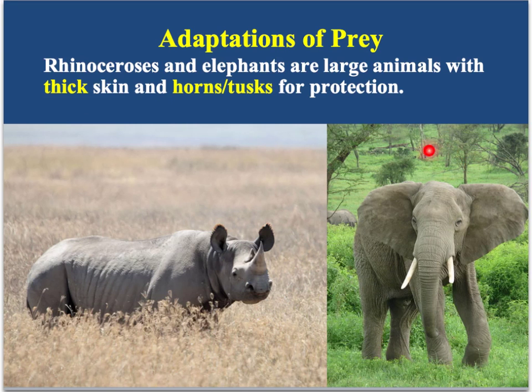Here we have a rhinoceros and an elephant — two of the largest land animals. The elephant is actually the largest and the rhinoceros is the second largest. Some of the adaptations they develop include thick skin, which helps deter a predator from biting them, and they also have horns and tusks that they use for protection. Elephants have been known to gore or stab a lion or hyena with their tusks to prevent attacks. These things don't always work, but they help some of them survive.